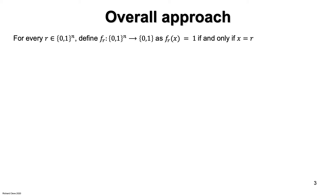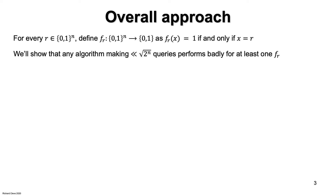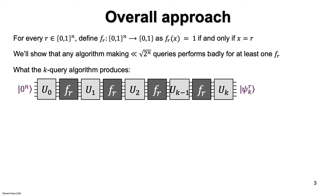The overall approach will be as follows. For every n-bit string r, define f_r as the function that takes value 1 at point r and value 0 everywhere else. We'll show that for any algorithm that makes asymptotically fewer than square root of 2 to the n queries, it performs badly for at least one f_r. Assume we have some k-query algorithm specified by U_0, U_1, up to U_k. Suppose that we insert one of the functions f_r into the query gate. Call the final state psi_r^k. The superscript r is because this state depends on which r is selected, and the subscript k emphasizes that k queries are made.